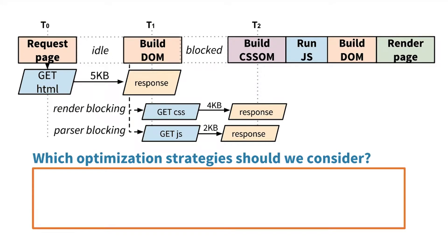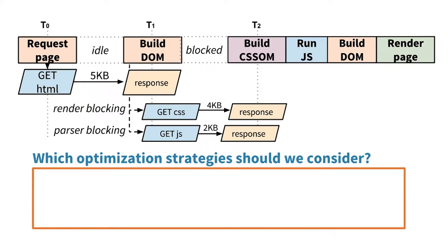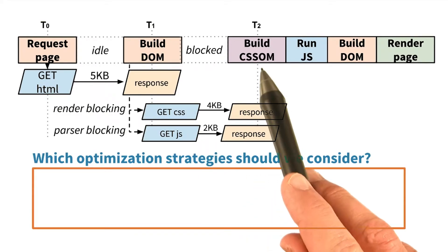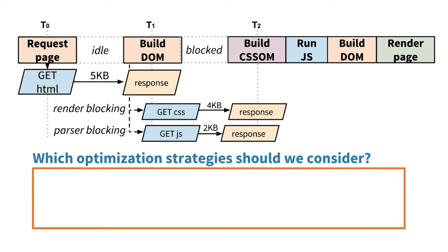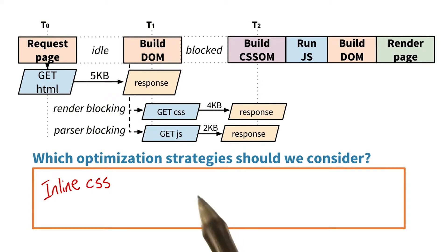We have an external CSS file which we need to construct the CSS on. If I inline that, then that could save a lot of time. Same goes for JavaScript — if I inline that, then we can skip the request. And in fact, if I inline both, then that's even better, because my critical path length will be one.